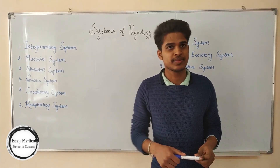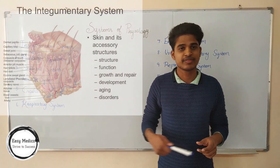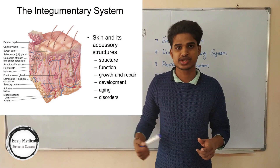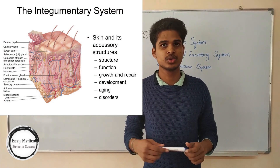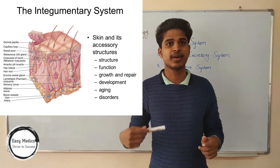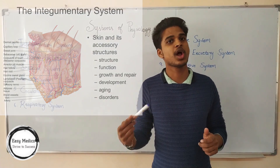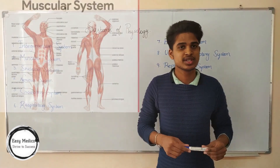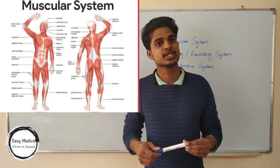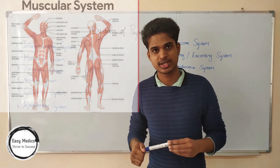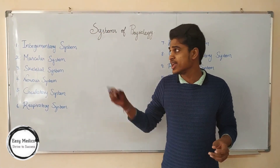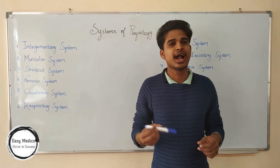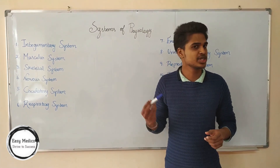First is the integumentary system, which consists of skin and its appendages. Its main function is to protect us from external damage and prevent loss of water. Then, the muscular system, which consists of the skeletal muscular system, smooth muscular system, and cardiac muscular system. Its function is to enable movement of our body and maintain body posture.